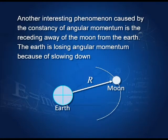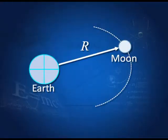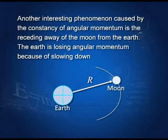Another interesting phenomenon connected with the conservation of angular momentum: consider the earth-moon system. The earth-moon system is isolated, so their angular momentum has to be conserved. If the earth is slowing down, then the angular momentum of the earth is decreasing, and since the total angular momentum must be conserved, the orbital angular momentum of the moon revolving around the earth must be increasing.